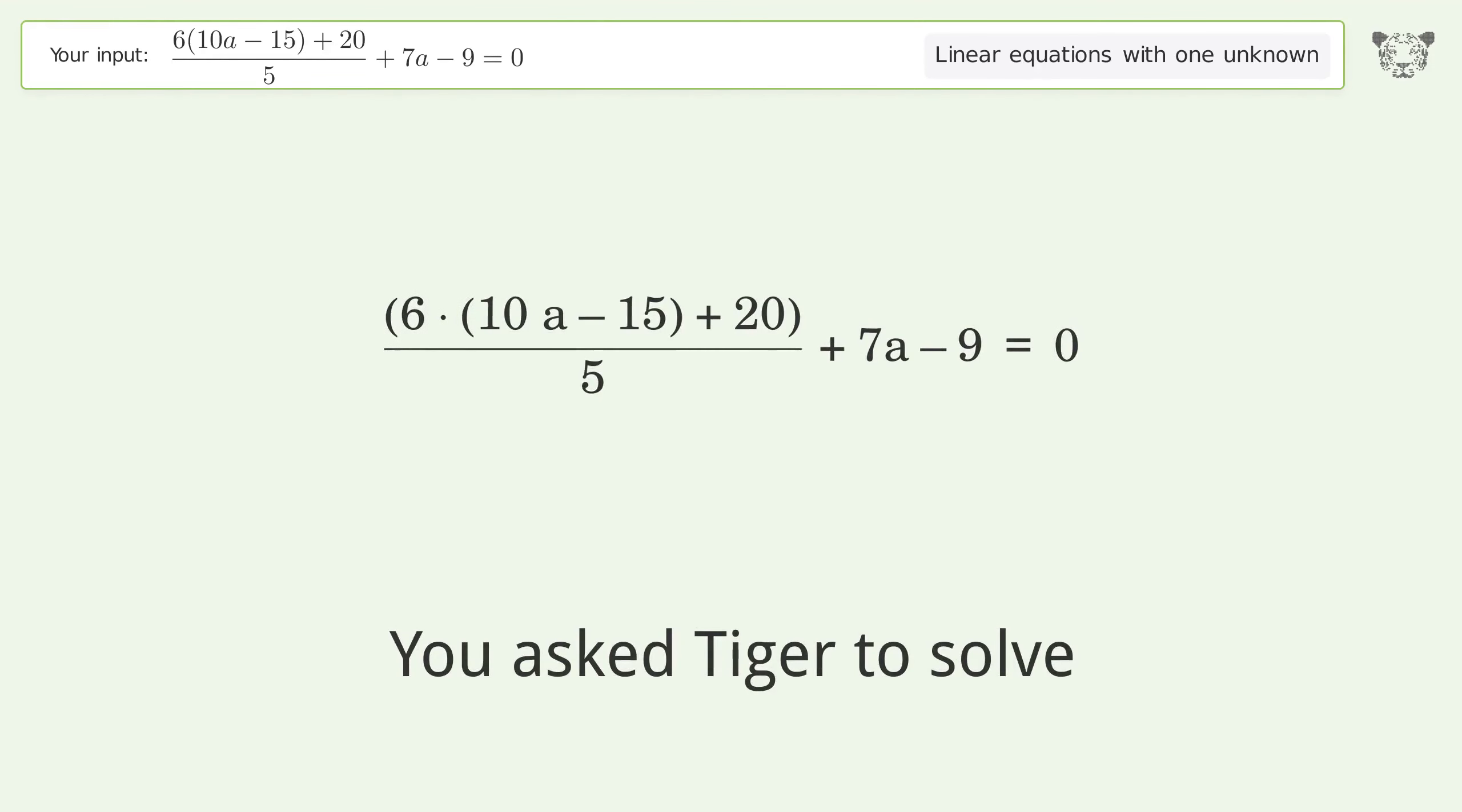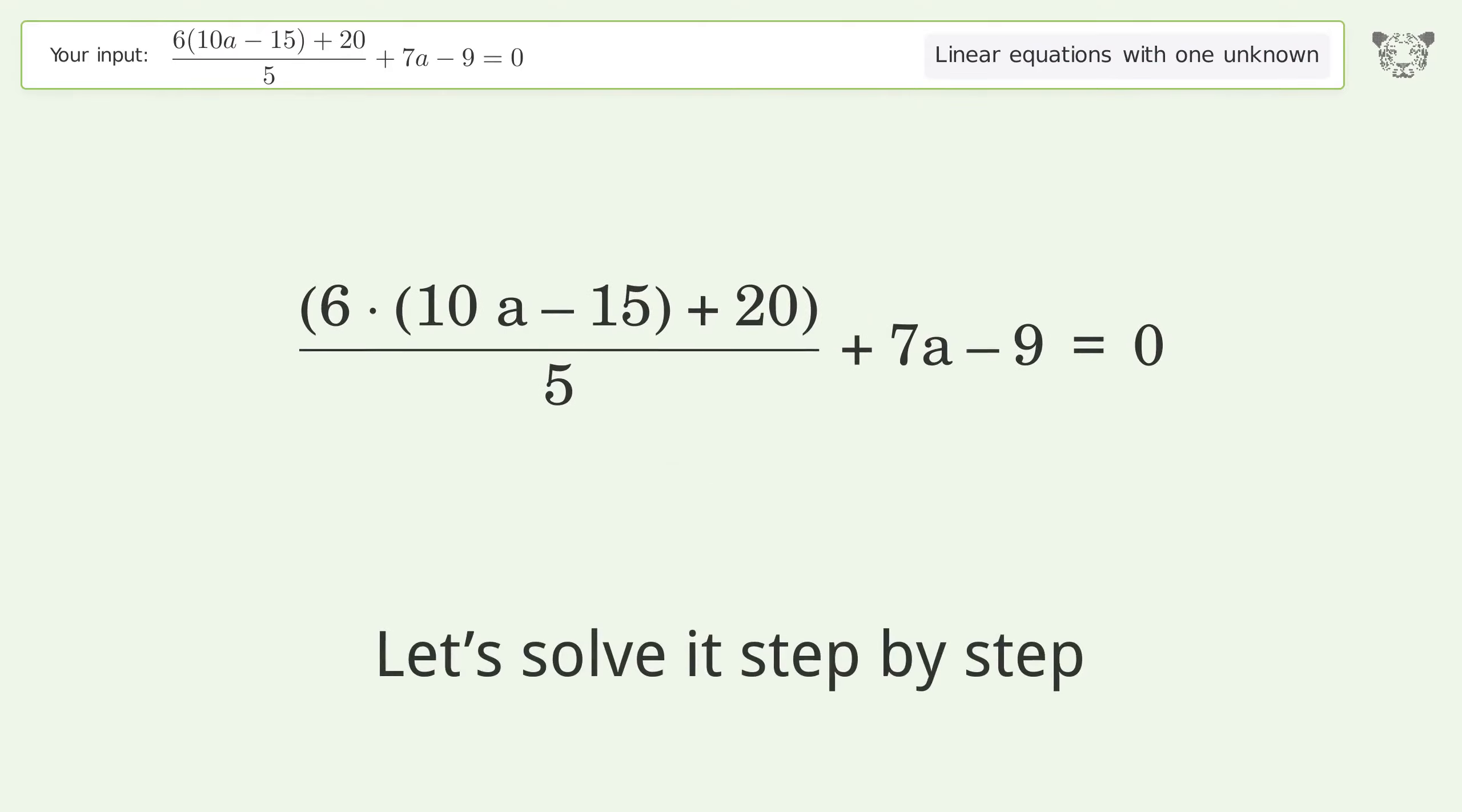You asked Tiger to solve this linear equation with one unknown. The final result is a equals 23 over 19. Let's solve it step by step. Simplify the expression. Break up the fraction.